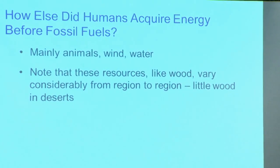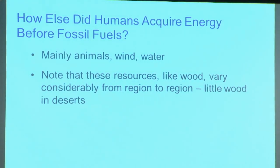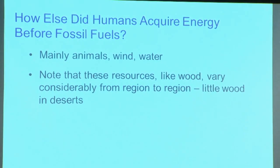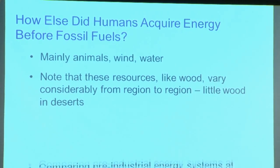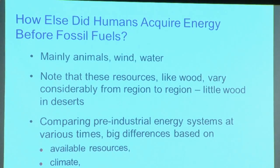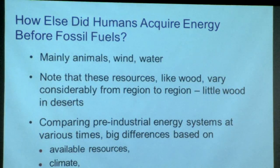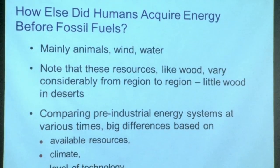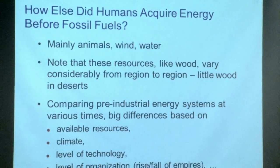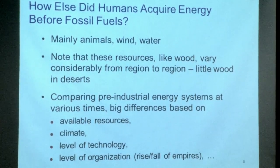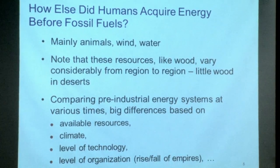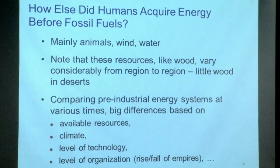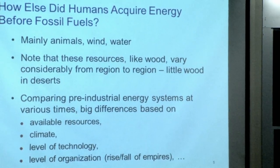The availability of all those energy sources varies enormously globally. If you're in a desert, you're not gathering much wood to burn. If you're in Africa, you're short of domesticated animals. If you look across pre-industrial economies and ask what their energy systems look like, they differ depending on available resources, climate — do you really need the heat? — level of technology, which varied a lot because communication was slow and erratic, and level of organization. When the Roman Empire fell, energy systems changed, organization changed.